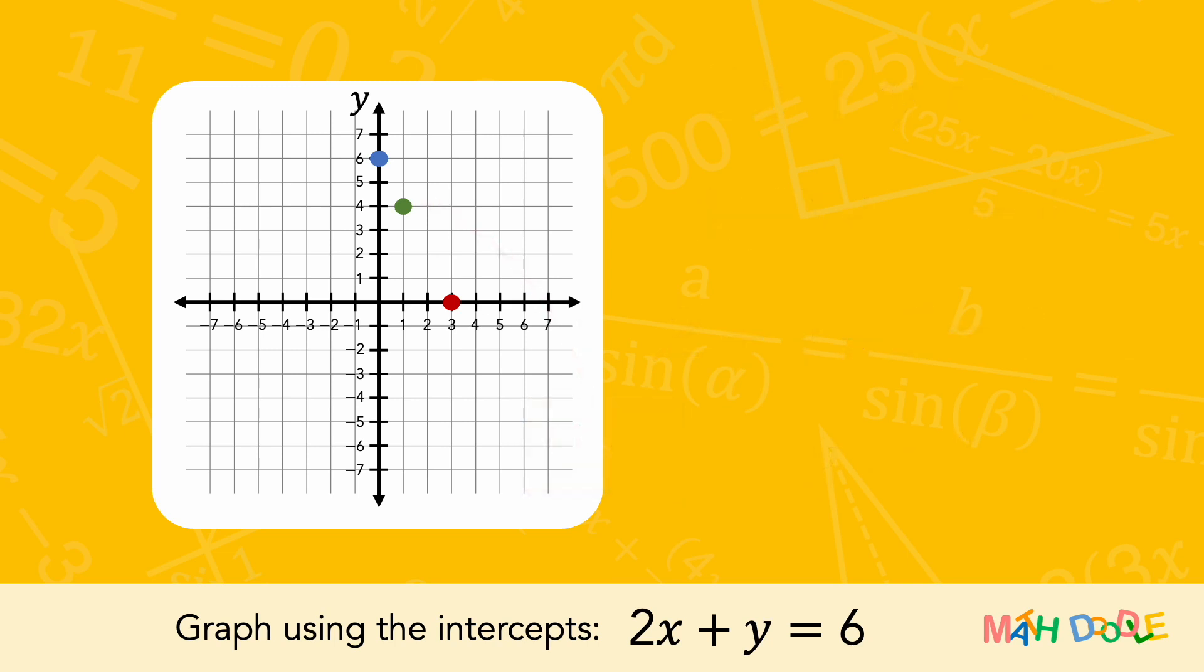Now, we can see that these three points line up. So, let's draw a line through these points and put arrows on both ends of the line. And this is the line of 2x plus y equals 6.